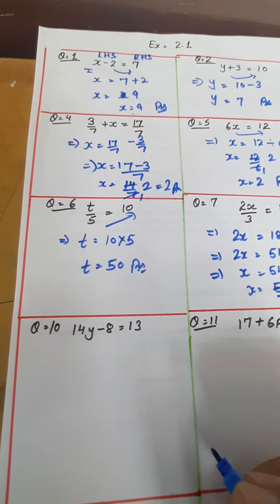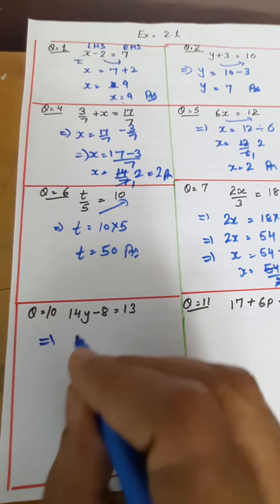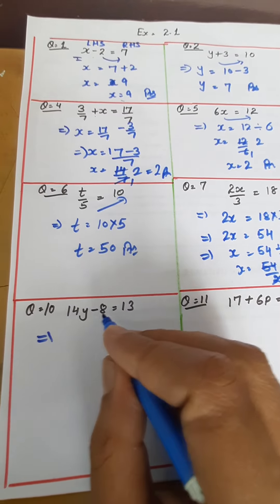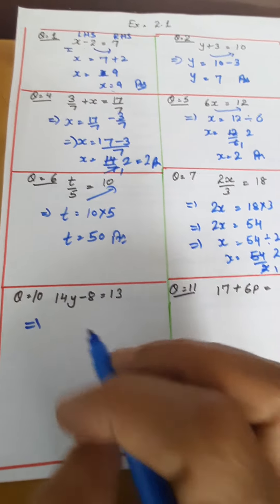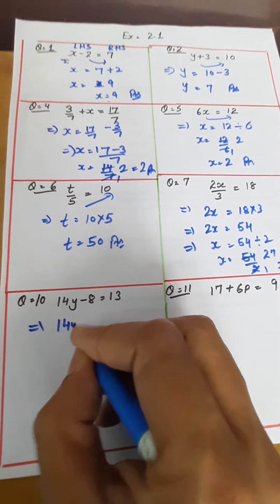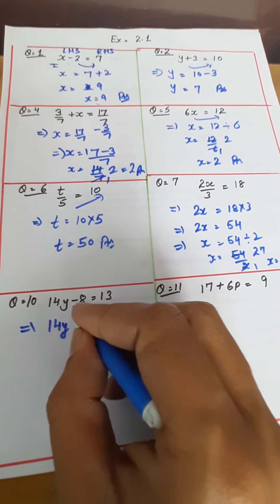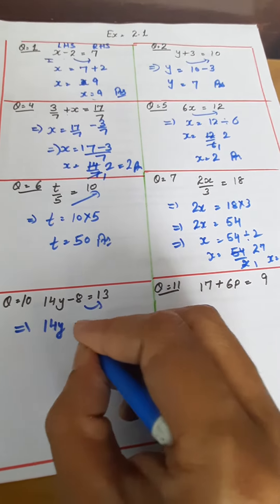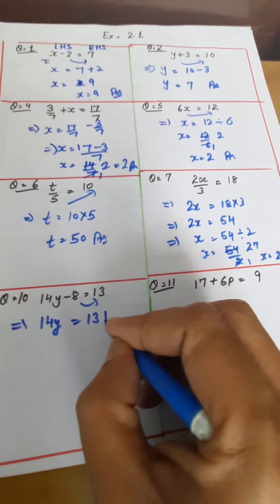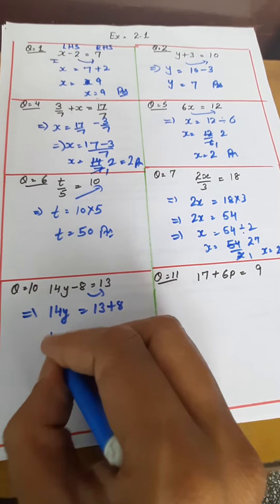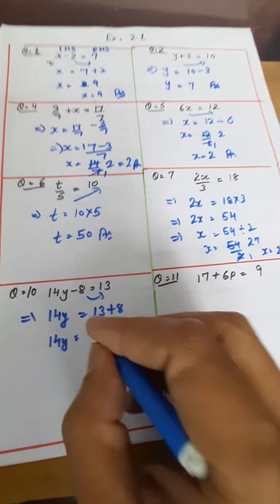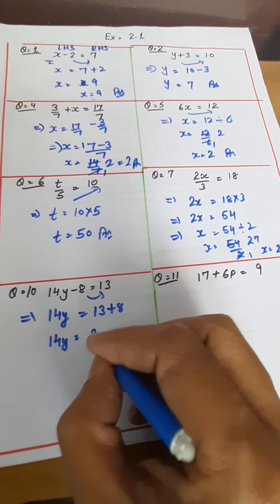Question number 10 now. It says 14y minus 8 equals 13. 14y is the variable here. Minus will be transposed. So it will be equals to 13 plus 8. 14y as it is, 13 plus 8 is 21.